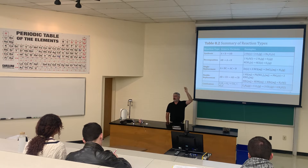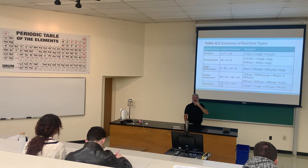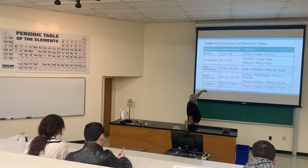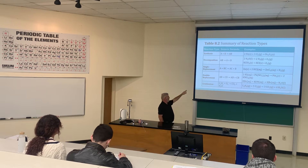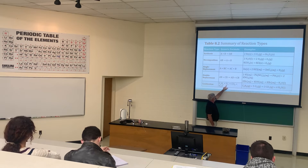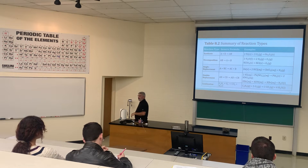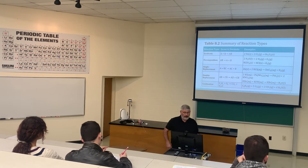A plus B going to AB — that's a synthesis reaction. AB going to A plus B is decomposition. A plus BC going to AC plus B is a single replacement. AB plus CD going to AD plus CB is a double replacement or displacement. And the last one is combustion — notice oxygen forming CO2 and water. Those are the types of reactions we're learning to identify at this point.